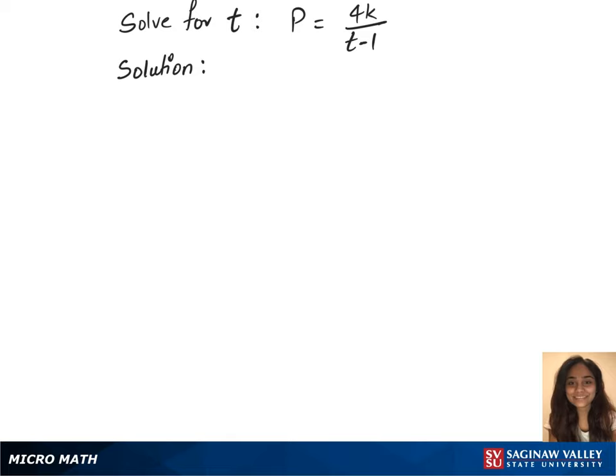To solve this question for t, we will first multiply t-1 on both the sides, which gives us p times (t-1) on the left equals to 4 times k on the right.